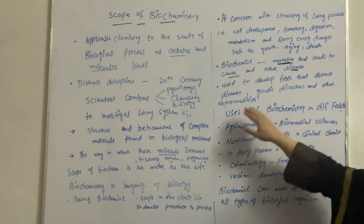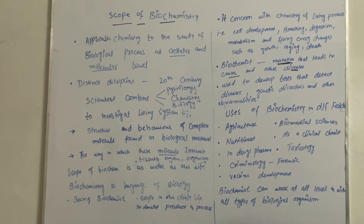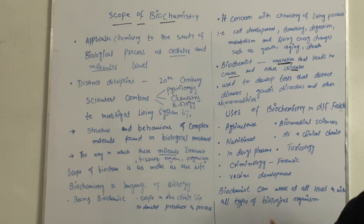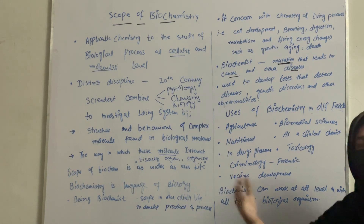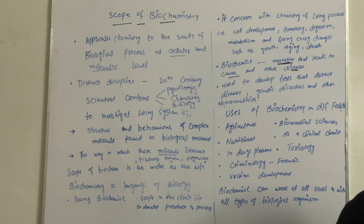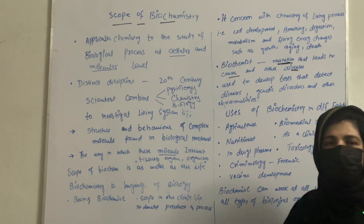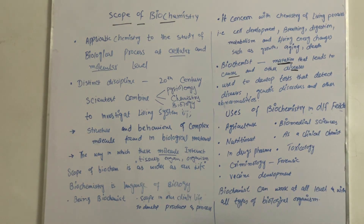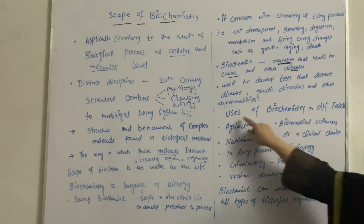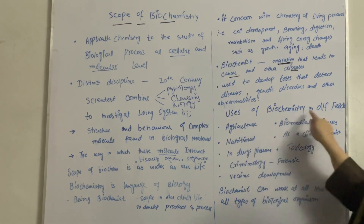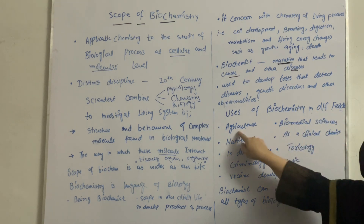If we go towards the uses of biochemistry in different fields — biochemistry is a much wider chemistry. Its scope and application varies from plants to medicinal sciences, from microorganisms up to the most complex organism, which is the human being. So this biochemistry has diverse uses across many fields.